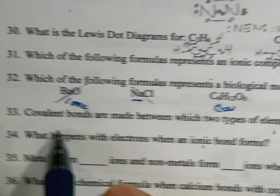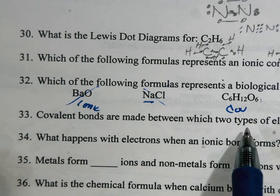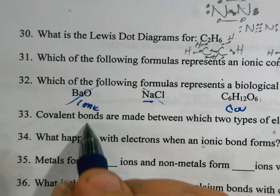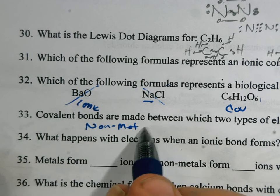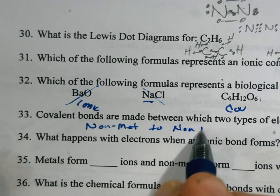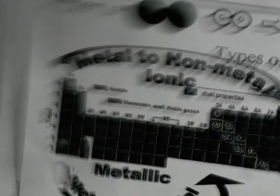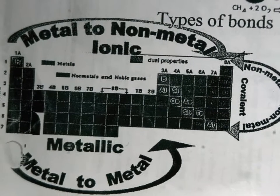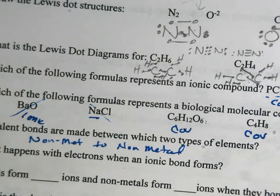Number 33, make sure we're back over here. Covalent bonds are made between which two types of elements? Non-metal bonded to non-metal. Nothing shows it better than the chart we've been working with all through this unit. We've got this one. You want to make sure that's on your summary page. And right there would be the zigzag line separating the metals from the non-metals.